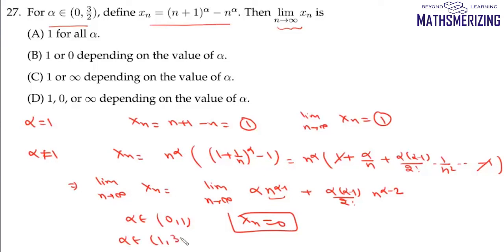But if alpha lies between 1 and 3/2, then n will have a positive power, and when it has a positive power, xn will approach infinity. So the answer to this limit will be 1, 0, or infinity depending on the value of alpha, and that's your option D.